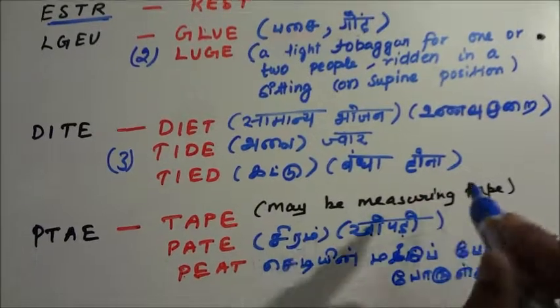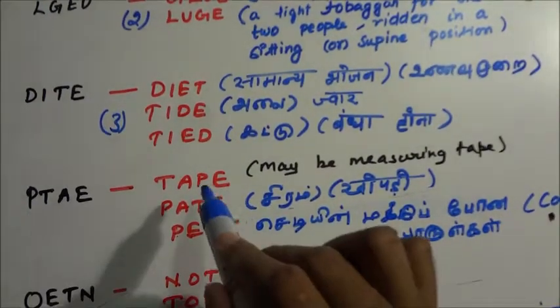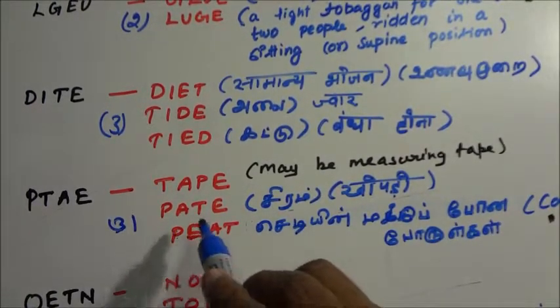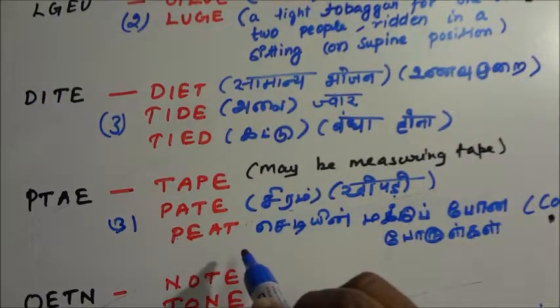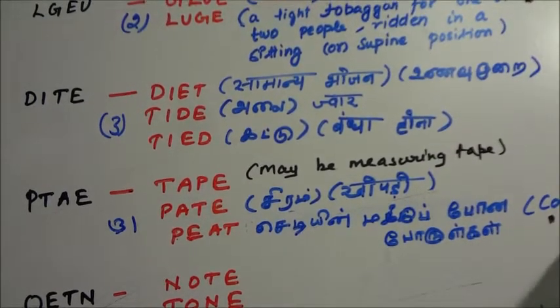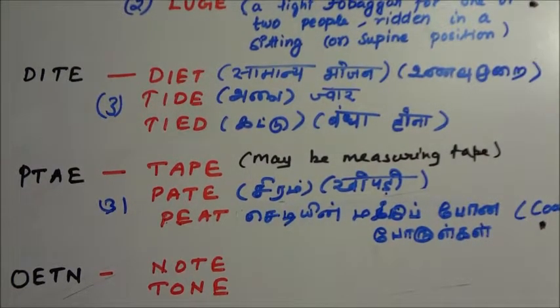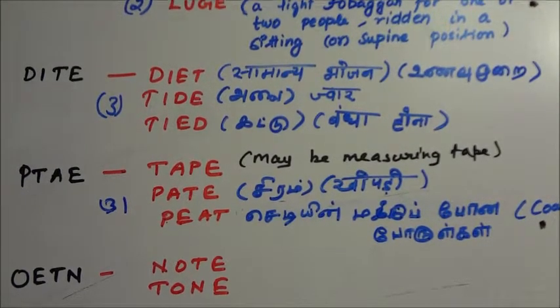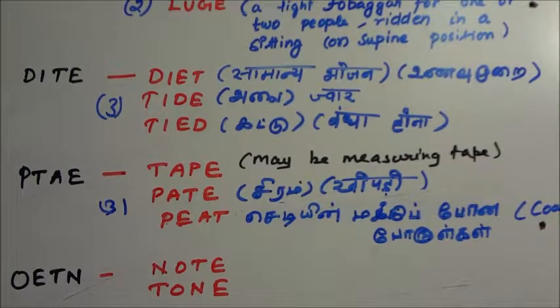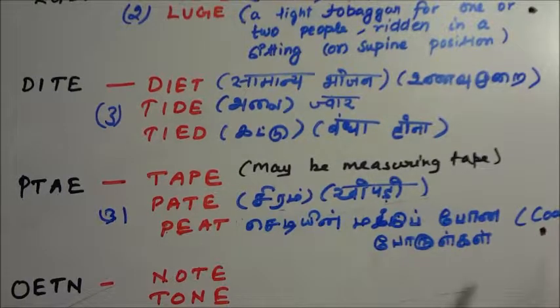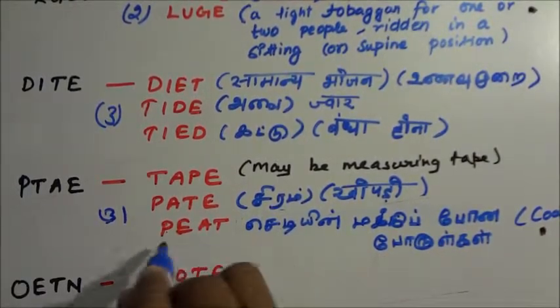P-T-A-E is the word given. From this we can form three words: TAPE, PATE, and PEAT. TAPE maybe a measuring tape - tape means a measuring tape. P-A-T-E in Tamil means a certain type of food. P-E-A-T is a certain material like coal - it's waste materials from plants and trees that are used to recycle and reform plants again. In Hindi, it's coal-like material.